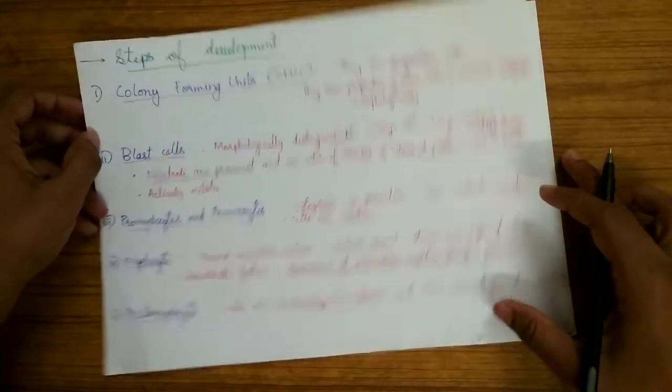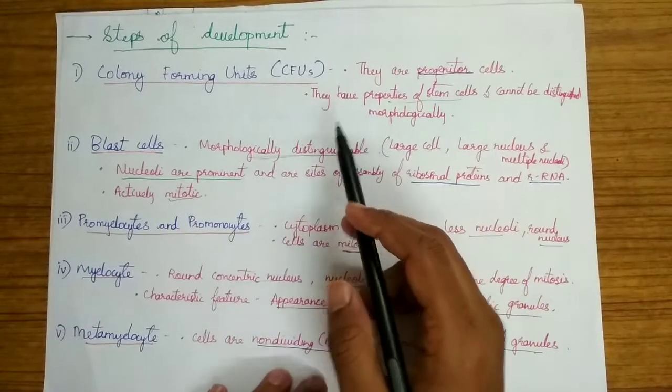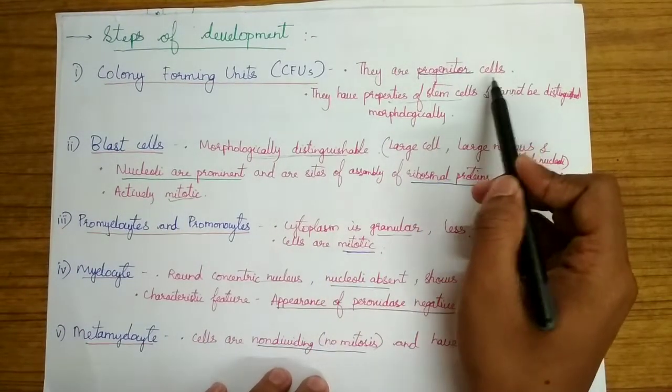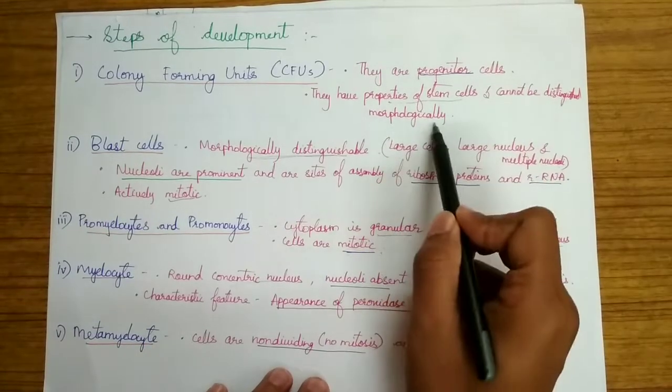Now let's talk about each step of development briefly. Steps of development. Colony forming units: they are the progenitor cells. They have the properties of stem cells and cannot be distinguished morphologically.